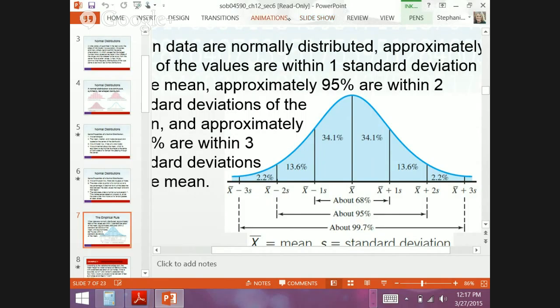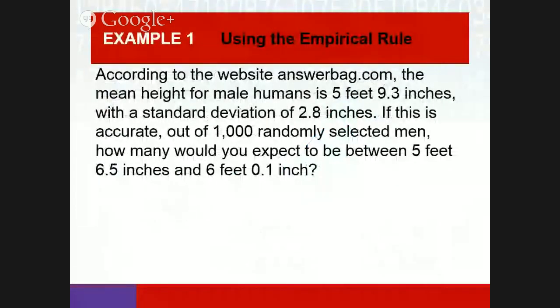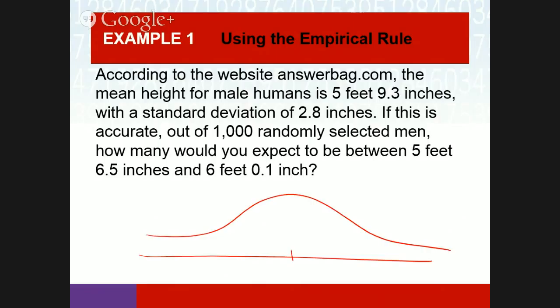According to AnswerBags.com, the mean height for a male human is 5 feet 9.3 inches, with a standard deviation of 2.8 inches. Out of 1,000 randomly sampled men, how many would we expect to be between 5 feet 6.5 inches and 6 feet 0.1 inch? This is a normal distribution. The mean is 5 feet 9.3 inches, with a standard deviation of 2.8 inches.